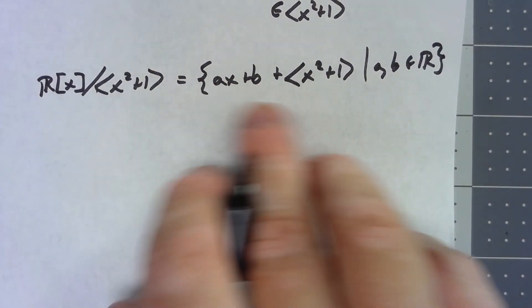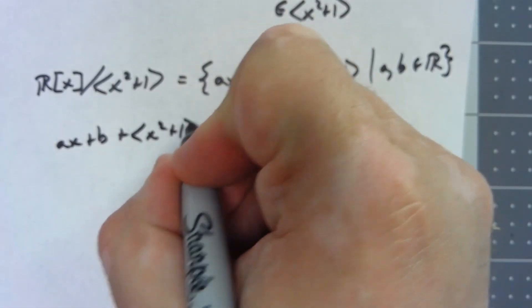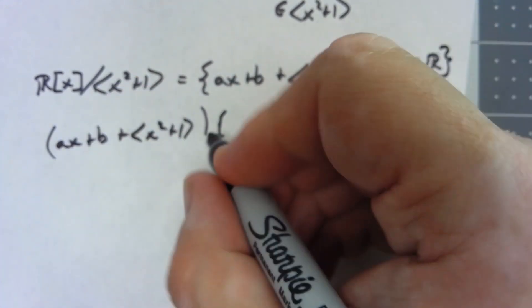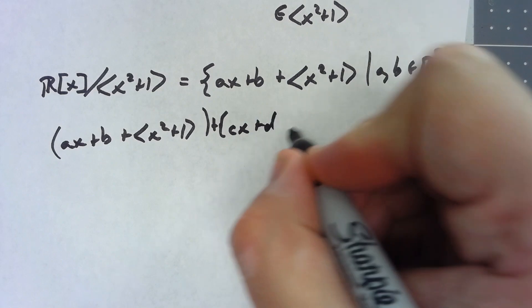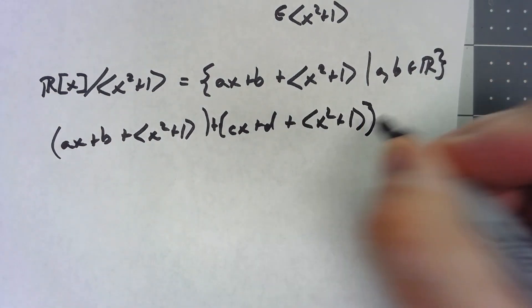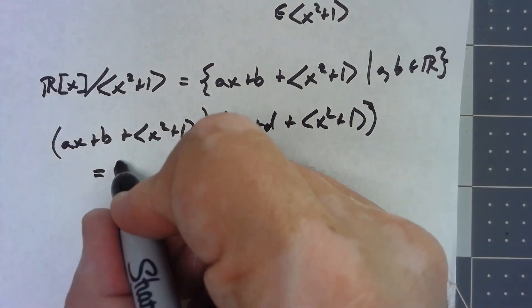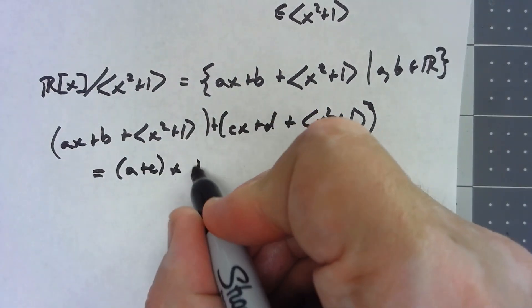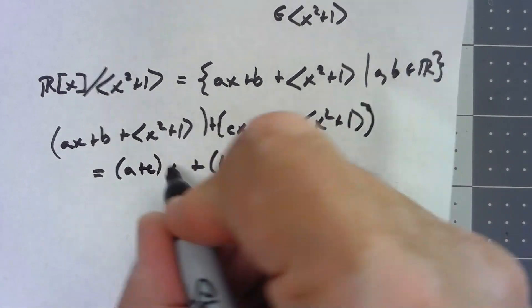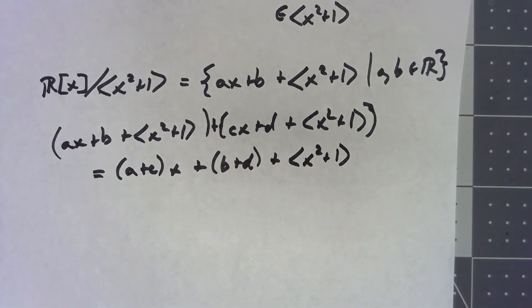How do we do arithmetic in this factor ring? Addition is easy. If I add ax plus b plus the ideal to cx plus d plus the ideal, basic algebra says I get a plus c times x plus b plus d, plus the ideal — and that's already in simplest form.